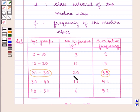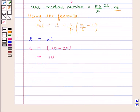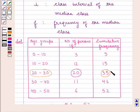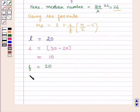f is the frequency of the class interval 20-30, which is 20. c is the cumulative frequency of the class just lower than the median class, which is 15.